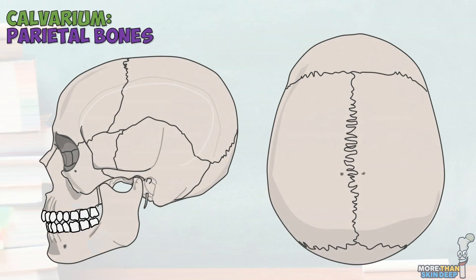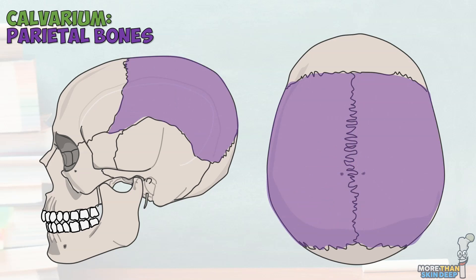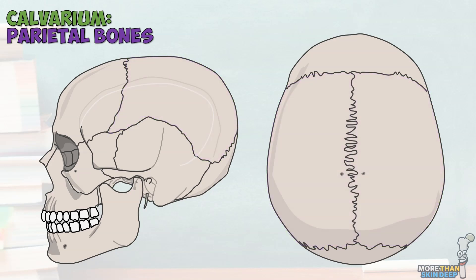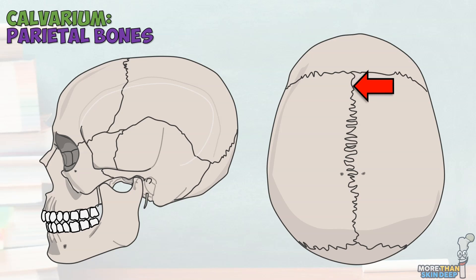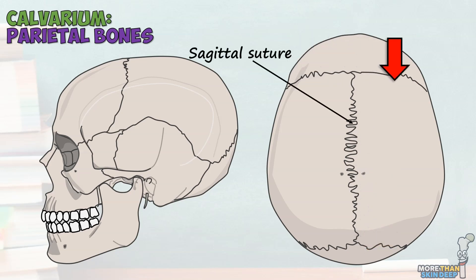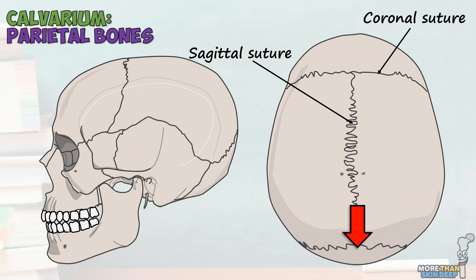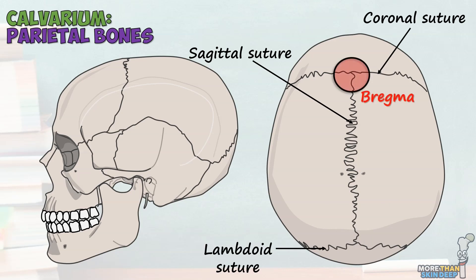The next two bones of the calvarium are the paired parietal bones, which form the lateral and superior part of the neurocranium. These are best seen from the side and above. Pay attention to this rigid bone that runs in a crescent shape across the frontal and parietal bones — it's formed by the attachment of the temporalis muscle, which aids in chewing. Looking from above, we can see that the parietal bones join each other down the midline at the sagittal suture, join the frontal bone at the coronal suture, and join the occipital bone at the Y-shaped lambdoid suture. Where the anterior sutures meet is known as the bregma, whilst the posterior sutures meet at the lambda.